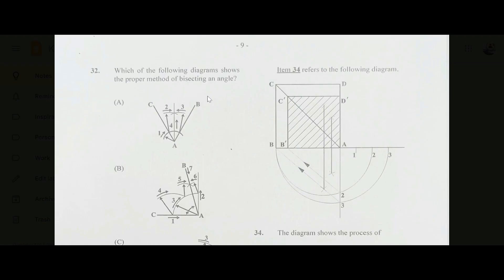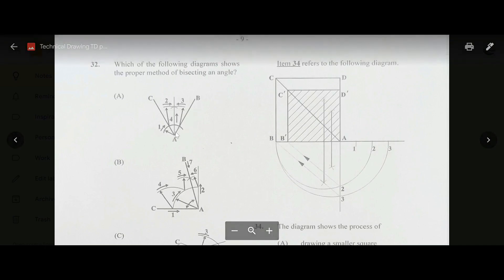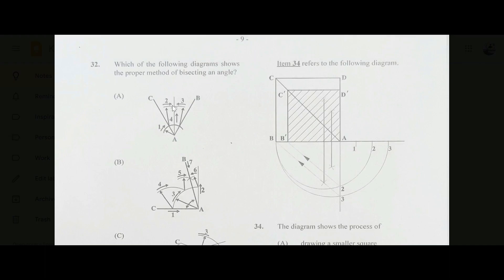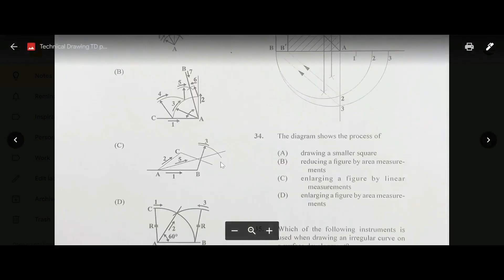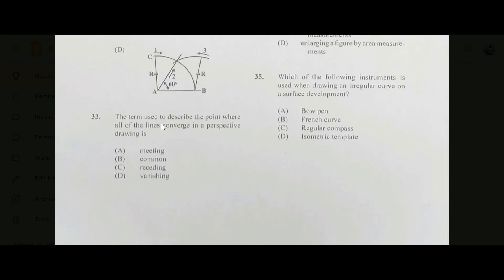Number thirty-two: which diagram shows the proper method of bisecting an angle? The answer is A. There is an original angle CAB; an arc is drawn using A as center to cut both CA and BA. Those two points are used as centers to draw two more arcs which intersect, and a line through this intersection bisects the angle — number 32, A. Number thirty-three: the term for the point where all lines converge in a perspective drawing is vanishing point — answer D.